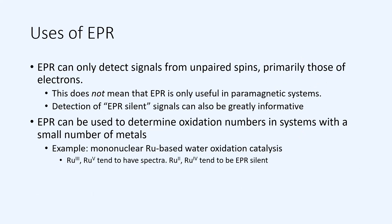So EPR can detect signals from unpaired spins or of paramagnetic species. This does not necessarily mean that it's only useful for these paramagnetic systems. If we have a species which does not have an unpaired electron or is diamagnetic, we say that this species is EPR silent. However, using EPR to determine the EPR silence can also be greatly informative.